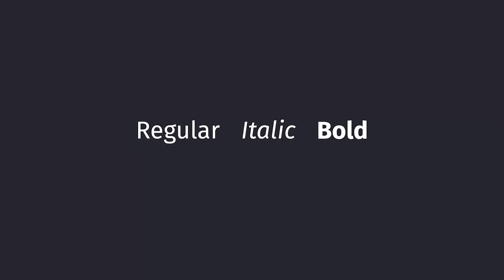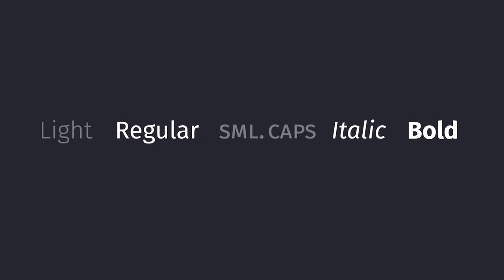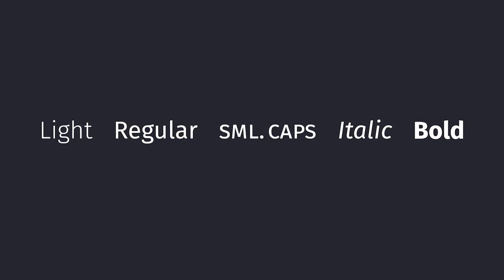First, you have to think about your different weights and styles — what kinds of styles or weights will you need in your project? You might use something to emphasize text, like bold or italics, or maybe for headings you need an ultra light. Also think about things like small caps, which can be a nice feature for body text. What weights and styles do you need?